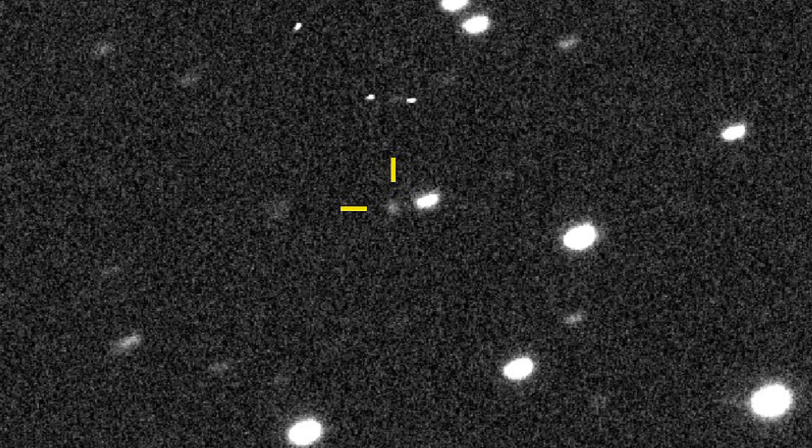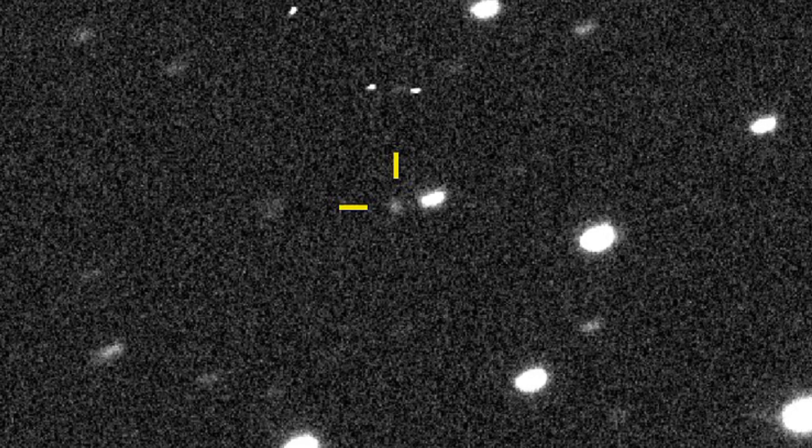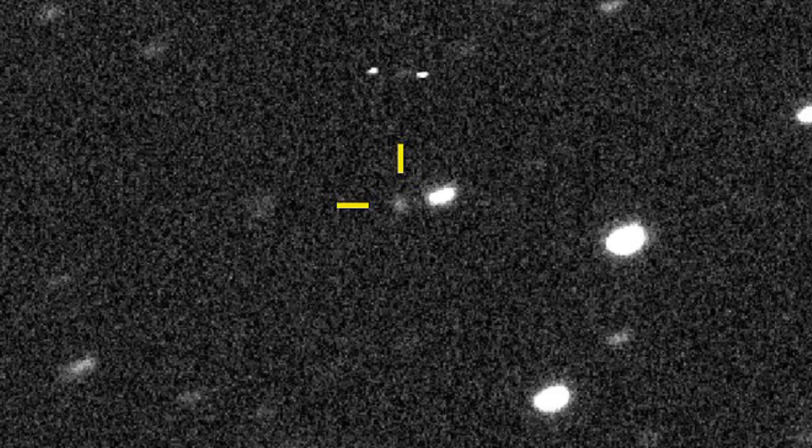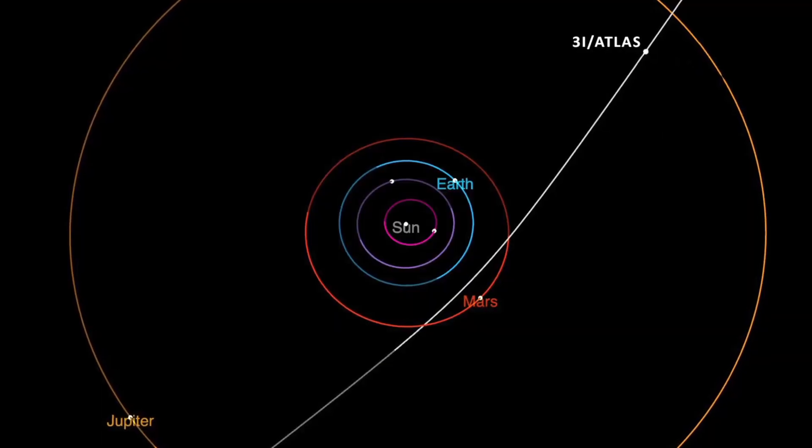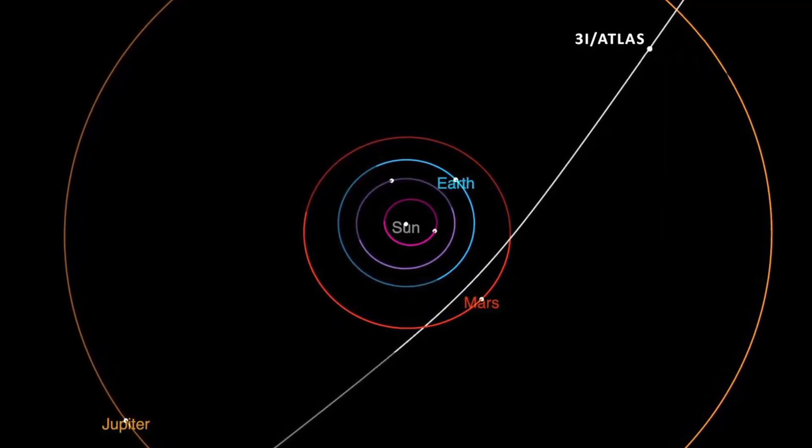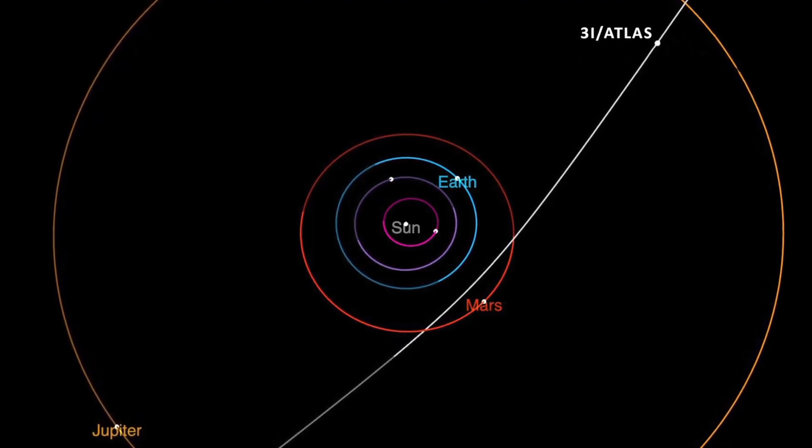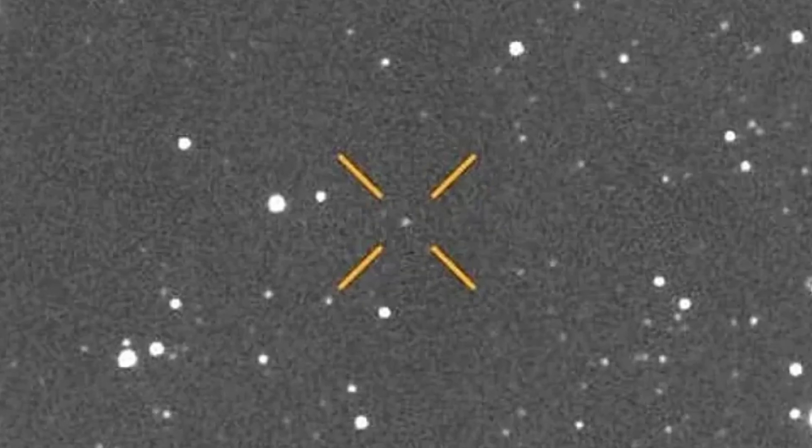Interestingly, the comet's brightness has remained fairly stable, suggesting either a slow rotation or that the coma is obscuring the nucleus entirely. 3i-Atlas will pass closest to the Sun on October 29th, reaching just 1.38 astronomical units, slightly inside the orbit of Mars.